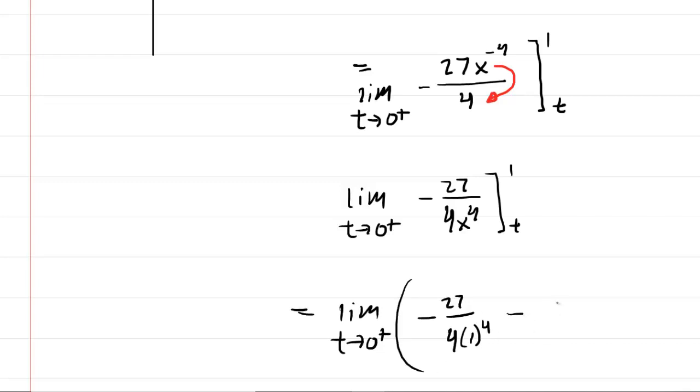So we'll have minus negative 27. So why don't we just do plus 27 over four t to the fourth.